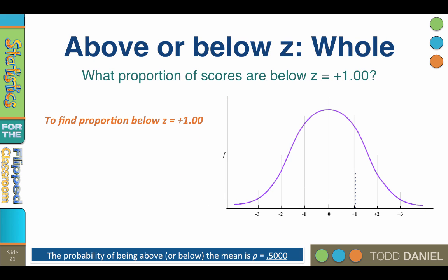Let's begin by tackling the problem of what proportion of scores are below z equals positive 1.00. Notice that I put a dotted line at z equals positive 1.00. We want to find the proportion of scores at or below this point. This whole section of the bell curve actually comprises two things.